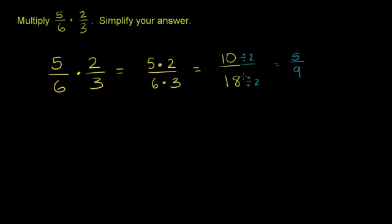Now you could have essentially done this step earlier on. You could have done it actually before we did the multiplication. You could have done it over here. You could have said, well, I have a 2 in the numerator, and I have something divisible by 2 in the denominator.